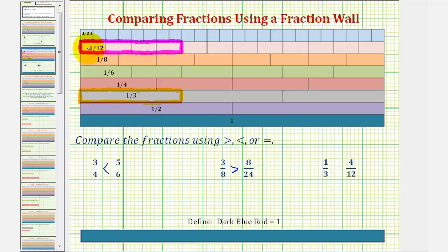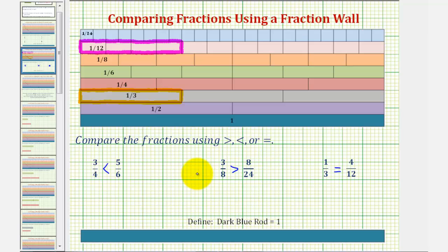Notice how the train of one-twelfth rods is the same length as the one-third rod, which means these two fractions are equivalent or equal. So one-third equals four-twelfths. A fraction wall can be a nice way to compare fractions. I hope you found this helpful.